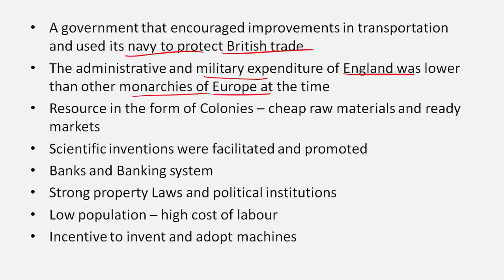The administrative and military expenditure of England was lower than other European monarchies, especially France. English kings did not spend lavishly — the government was very frugal. Because they were not spending so much, they needed less money, and could keep tax rates low. This allowed entrepreneurs to flourish, unlike other monarchies at that time which had very heavy taxation systems.